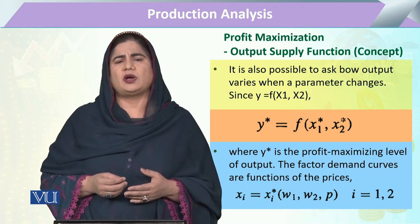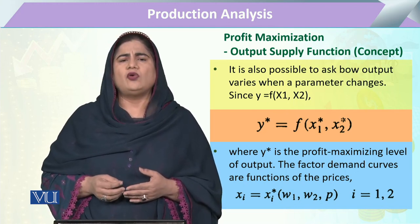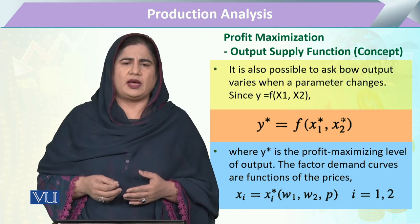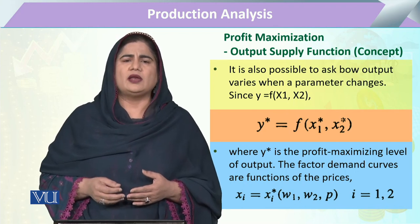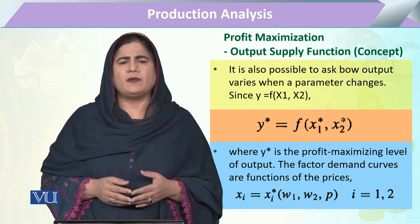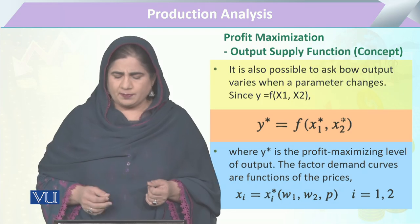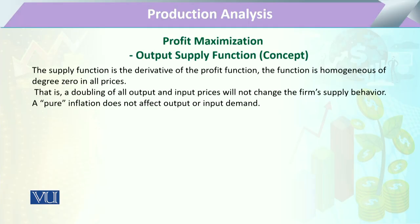In response to the price of the output, how a firm will be able to supply can be calculated in the form of the output supply function. The supply function is always derived from the derivative of the profit function, because the firm always has to maximize its profit.